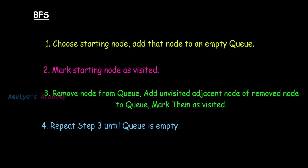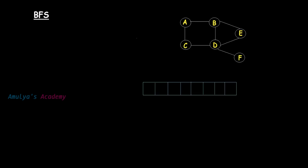First, add the starting node to the queue. Then remove it from the queue and add all unvisited adjacent nodes of the removed node to the queue, then mark them all as visited. Repeat the same process — remove a node, add its adjacent nodes to the queue, mark them as visited — until the queue is empty. Here we have an undirected connected graph, and this is the queue.